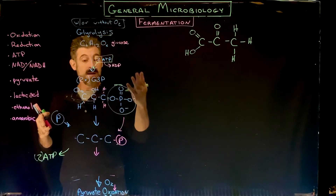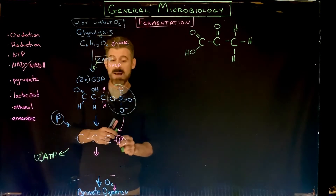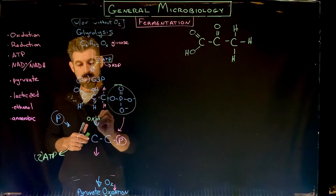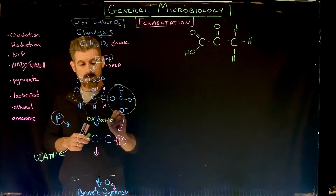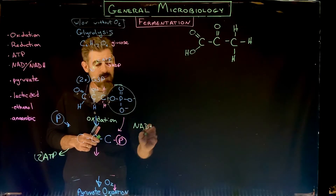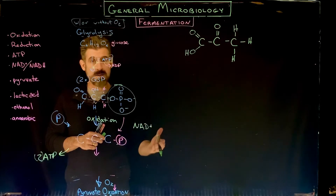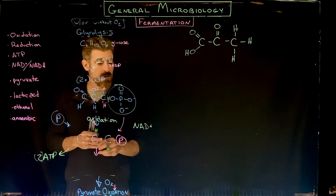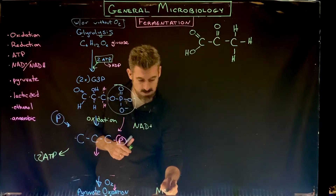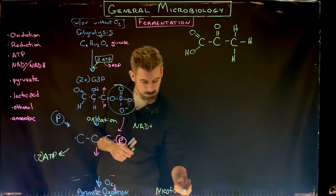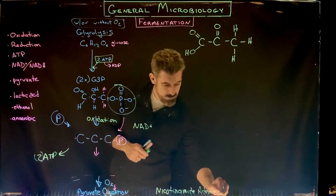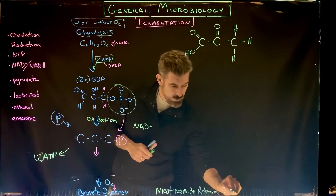What's going to happen in glycolysis is a very important oxidation event. In this oxidation event, an electron carrier called NAD - nicotinamide adenine dinucleotide - is involved. I'll write it out here because it's important to fermentation as well. Nicotinamide adenine dinucleotide.